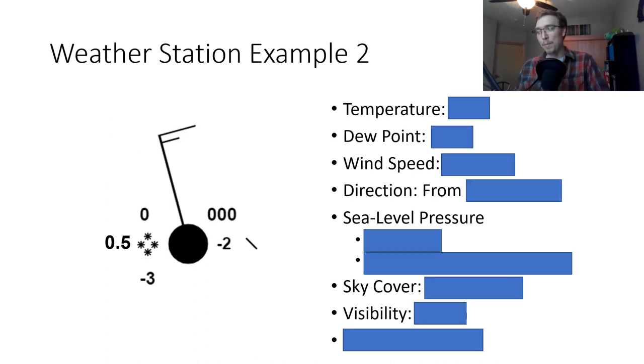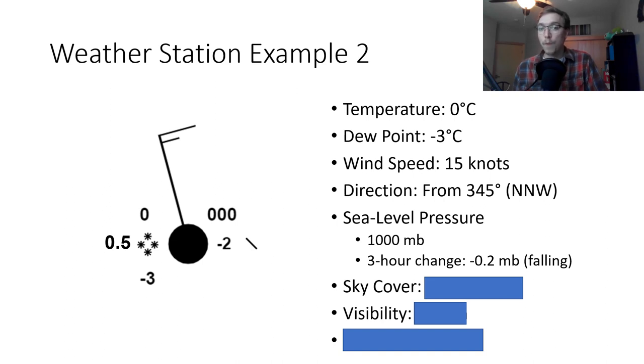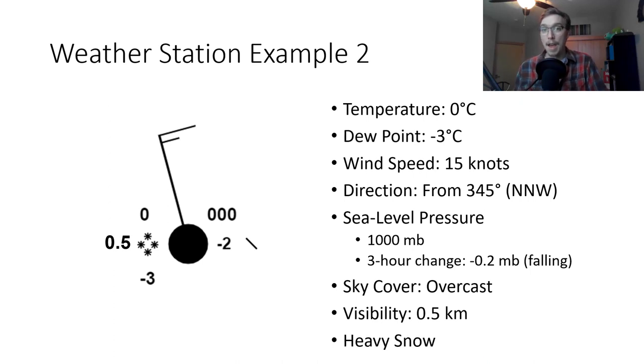Here's our next example. Go ahead and pause and reason this one out and come back. Temperature, zero degrees Celsius. Dew point, negative three degrees Celsius. Wind speed, 15 knots from the north-northwest. Sea level pressure, a thousand millibars. Falling at a rate of 0.2 millibars over a three hour period. It is completely overcast. Low visibility, 0.5 kilometers. And heavy snowfall.